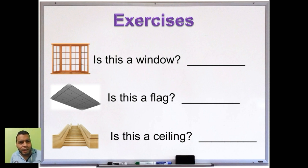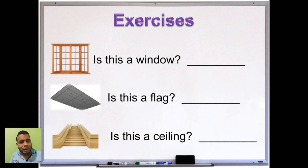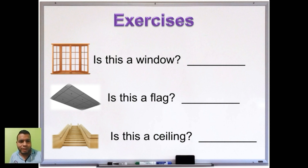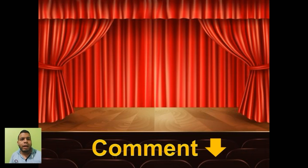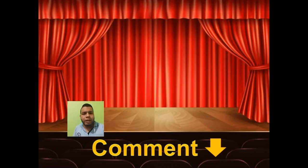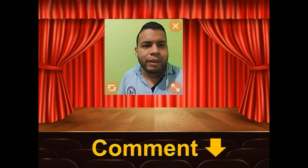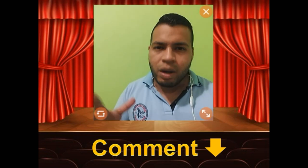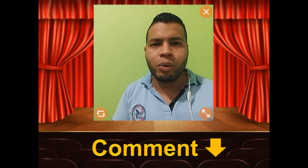Now let's see the exercise. Is this a window? Is this a flag? Is this a ceiling? Ustedes deben responder esas preguntas en su cuaderno, ya sea positiva o negativa — yes it is or no it isn't. Adicionalmente, también debemos hacer un resumen del vocabulario que aprendimos el día de hoy.